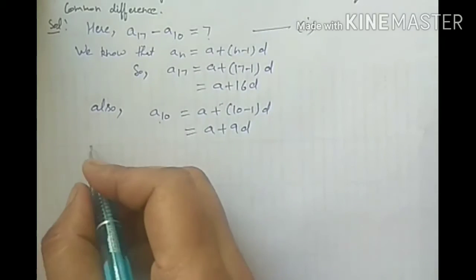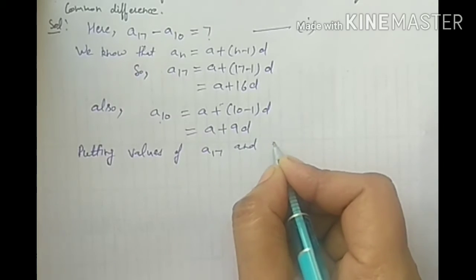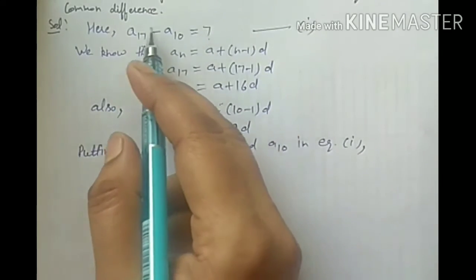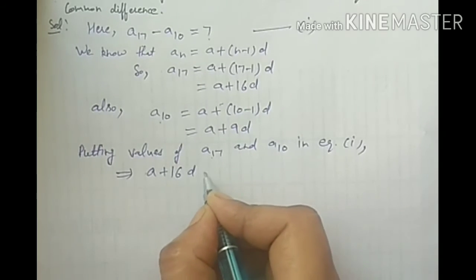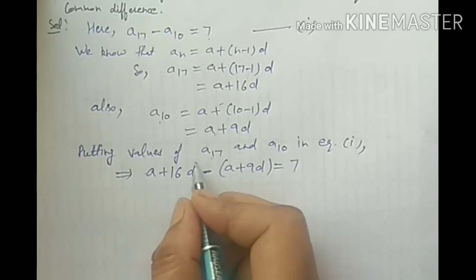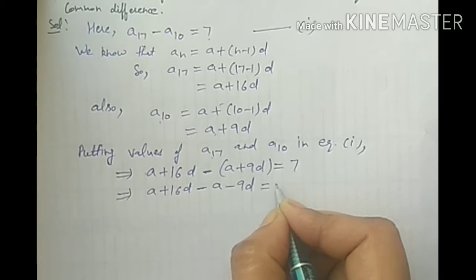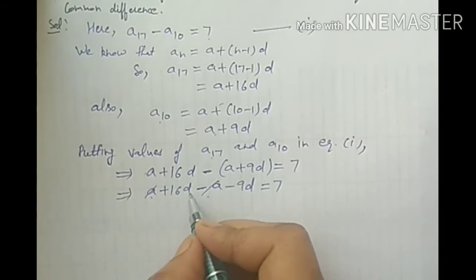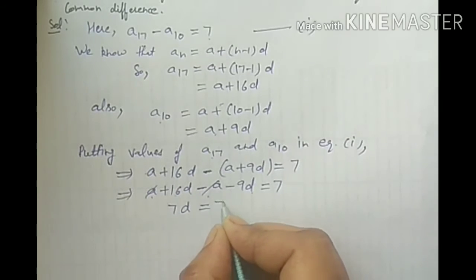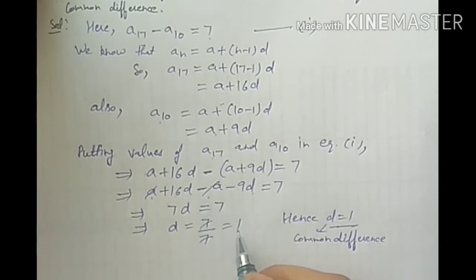Equation 1: A17 minus A10 is equal to 7. Putting values of A17 and A10: A plus 16D minus (A plus 9D) equals 7. Opening brackets with sign change: A plus 16D minus A minus 9D equals 7. A minus A cancels. So 7D equals 7, giving D equals 7 divided by 7 equals 1. Hence d is equal to 1.